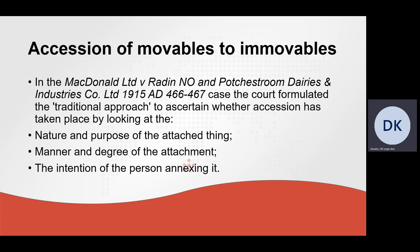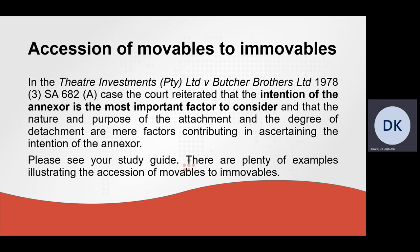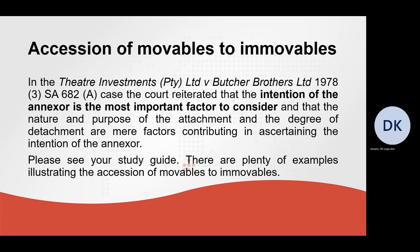There are three requirements formulated by courts to ascertain whether accession has taken place: first, the nature and purpose of the attached thing; second, the manner and degree of the attachment; and third, the intention of the person annexing it. In Theatre Investments v. Butcher Brothers, the court reiterated that the intention of the annexer is the most important factor to consider, and that the nature and purpose of the attachment and the degree of detachment are mere factors contributing to ascertaining the intention of the annexer.